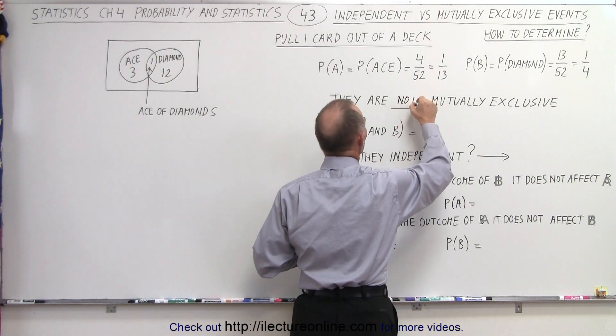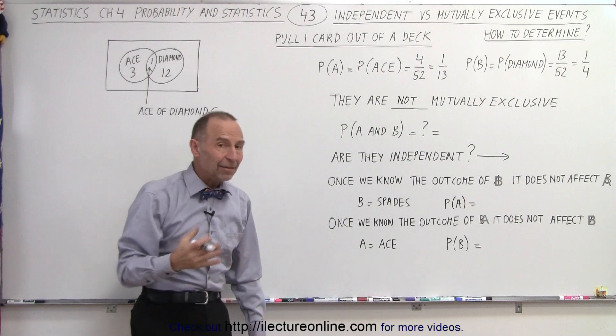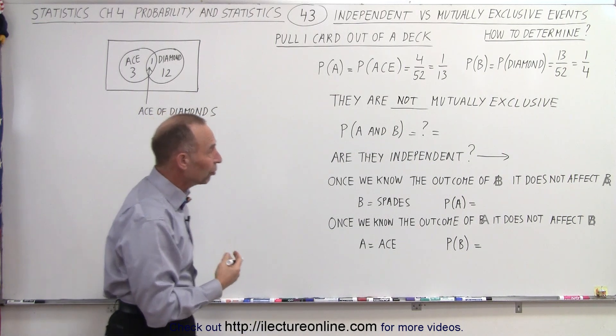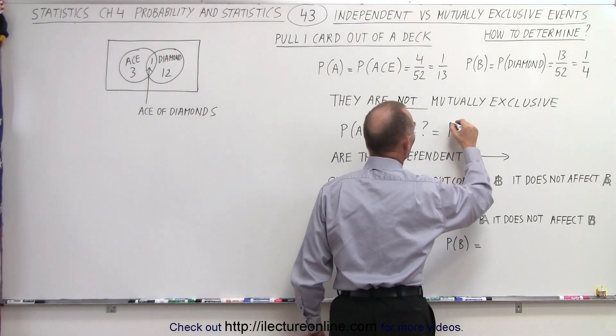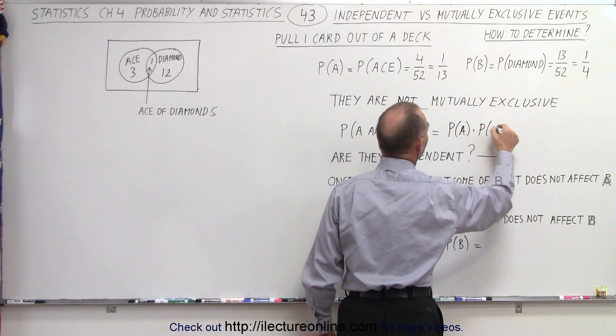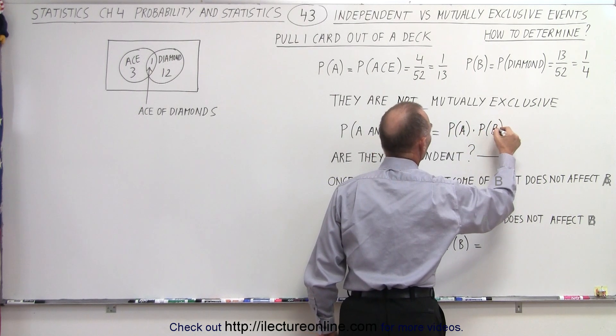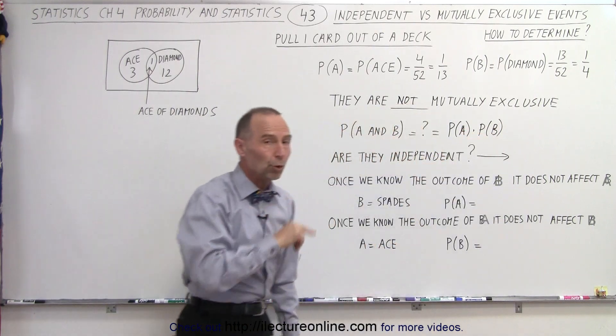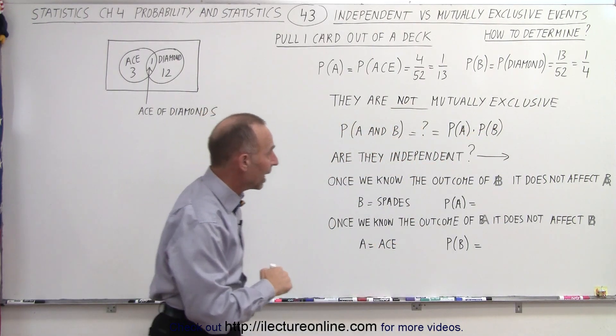Next, what does it mean that we now find the probability of A and B? Since they're not mutually exclusive, the answer is that it's the product of the probability of A times the probability of B. Now, we could not do that if they were mutually exclusive, but in this case we can.